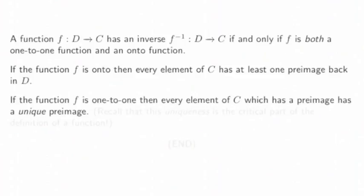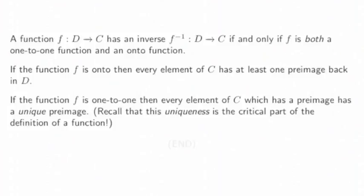If a function is one-to-one, then every element of C which has a preimage has a unique preimage. And recall that this uniqueness is a critical part of the definition of a function.